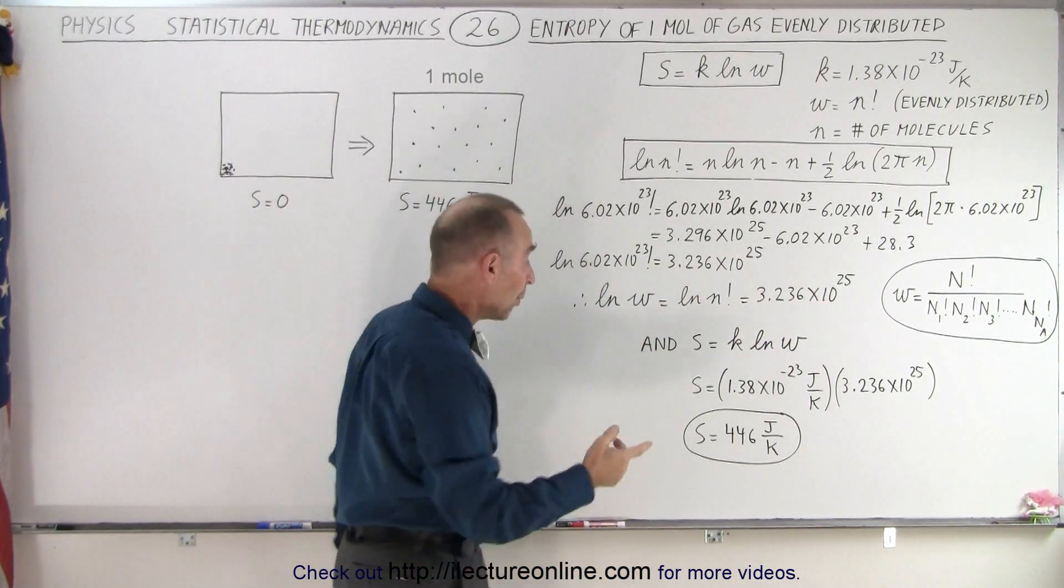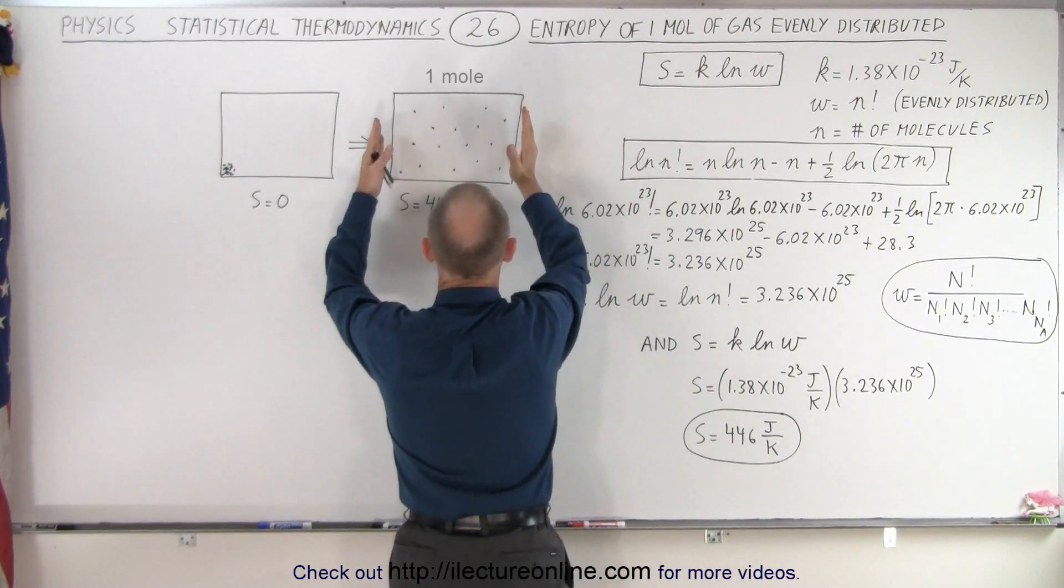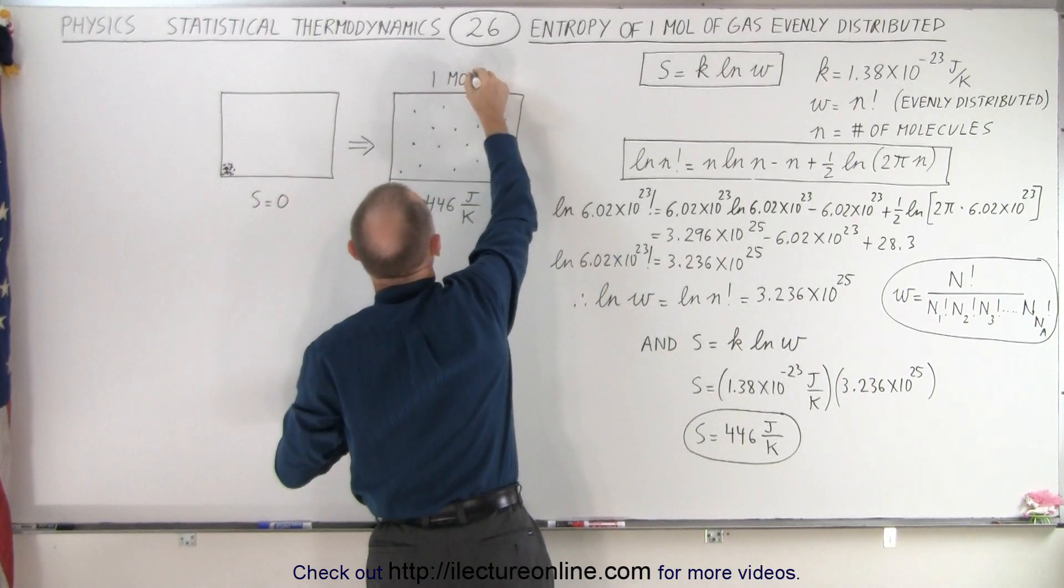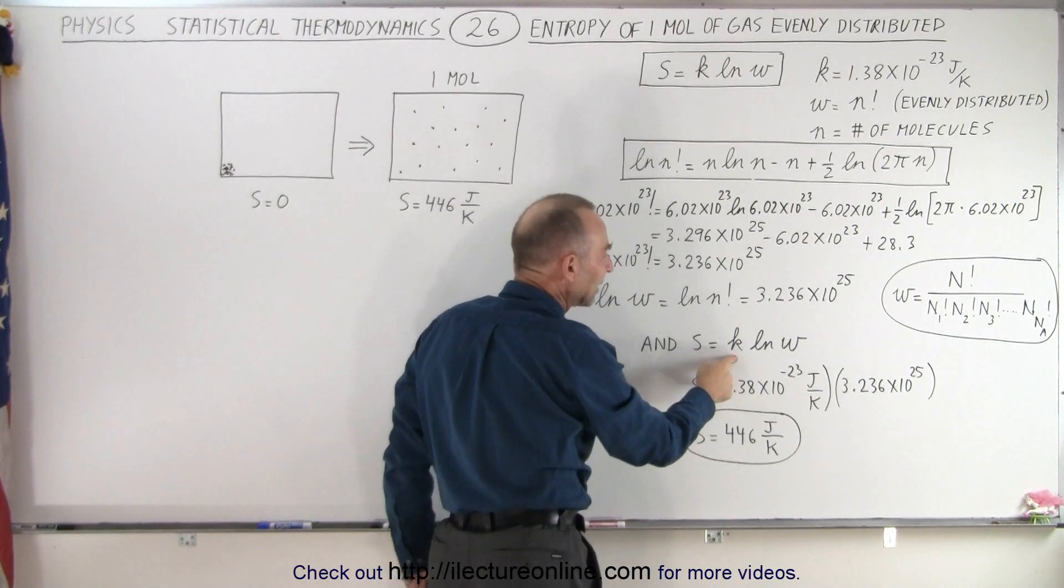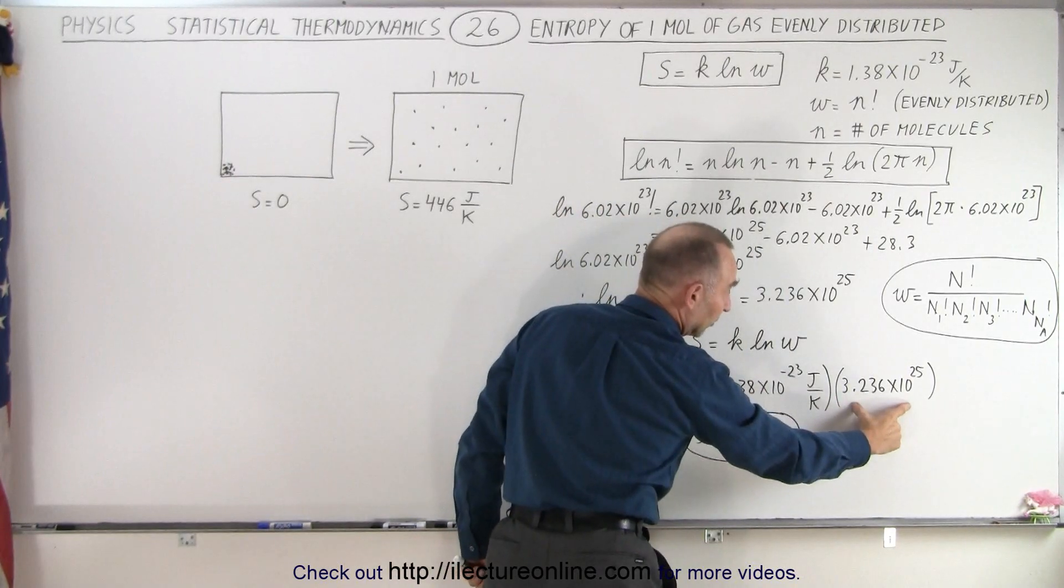Now, when we want to calculate the entropy of the situation, we have one mole of molecules, and maybe I just want to put down there one mole, so we can clearly see that that's how many molecules are in the container. The entropy of that will be k times the natural log of W. We now know what the natural log of W is equal to.